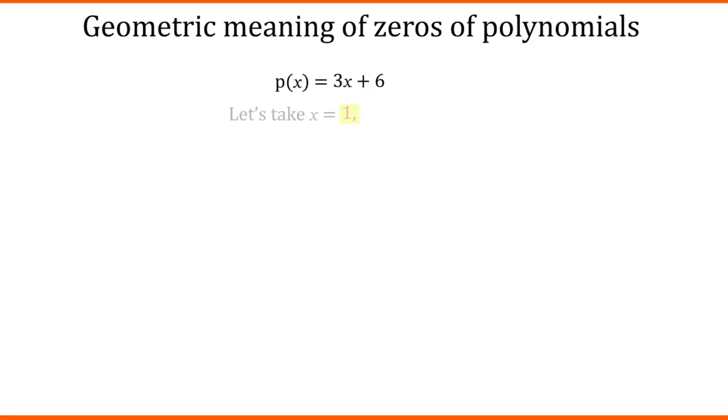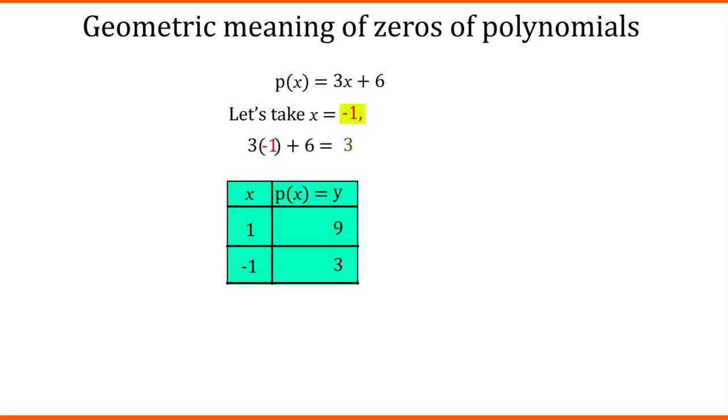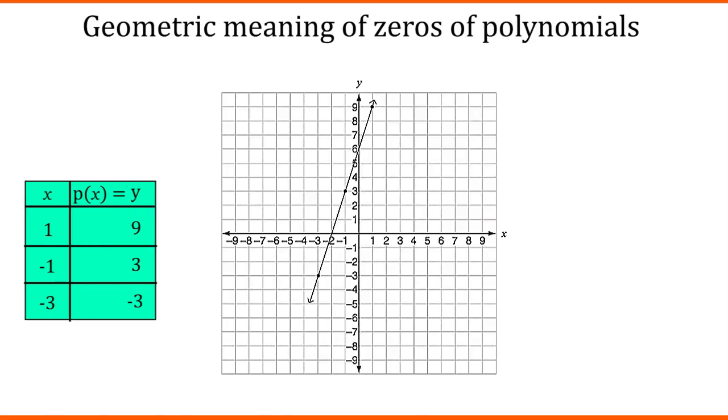Let's take x equals 1 and we will get 9. If we take x equals minus 1, we will get 3. And let's take x equals minus 3 and we will get the value as minus 3. If we draw these points on a graph and join them, we will get a straight line.